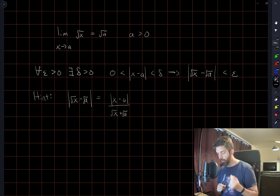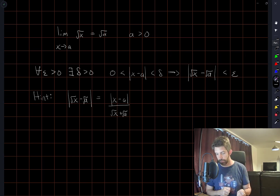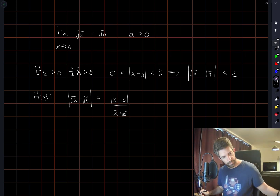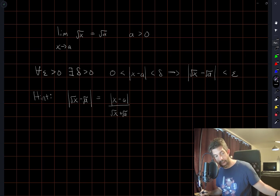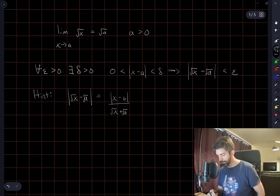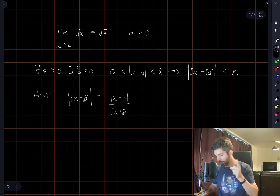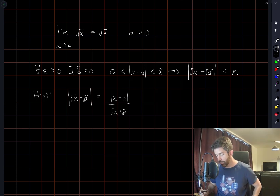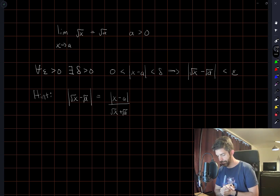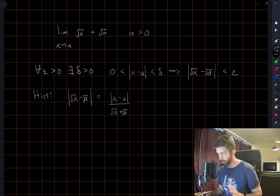So the choice of delta that works when a is equal to zero should work for other values of a. We're not asked to show this for a equals zero, but I'm still going to make that choice of delta. Before fully locking in the value of delta, I'm going to do some manipulations and work through some rough work.